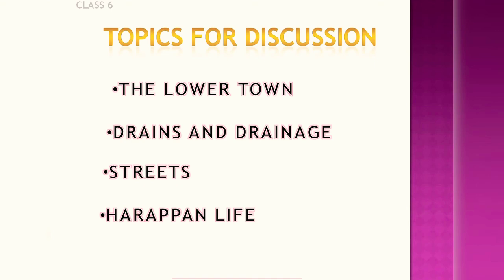Let us now learn about the life of people in the Harappan civilization. The first point is social life. There were probably different social groups in Harappan society. Political and social institutions had become more complex at that time. It was no longer a society where everyone was equal — there were differences in power, prestige, and wealth.